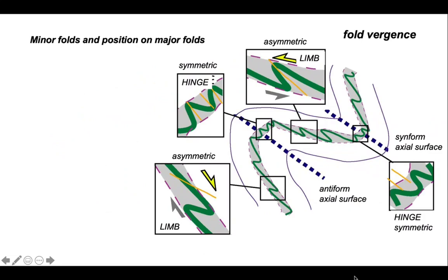How do minor folds work around larger scale fold structures? We can see that the sense of asymmetry varies from limb to limb. At the hinge area the folds are symmetric. In other words, the relationship of the axial surfaces of our minor folds and their enveloping surface is 90 degrees.